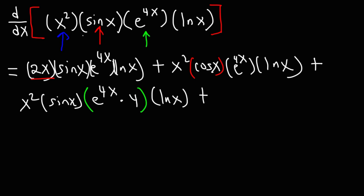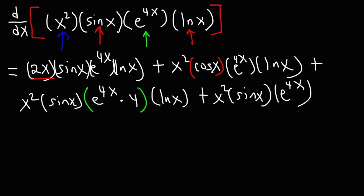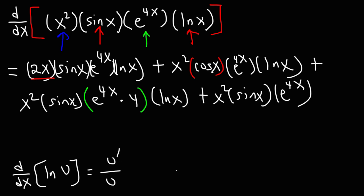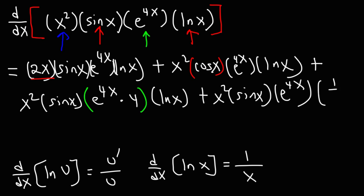For the last term, we rewrite the first three terms: x squared sine x times e to the 4x. Now we need the derivative of the natural log of x. The derivative of the natural log of u is u prime divided by u. Since u is x and the derivative of x is 1, the derivative of the natural log of x is 1 over x.